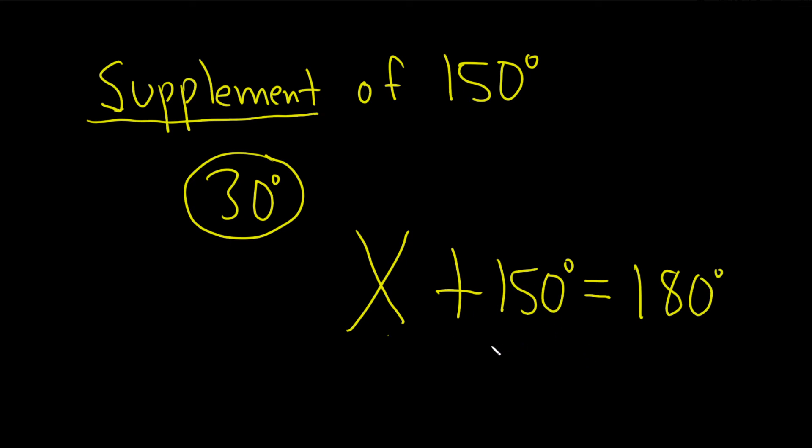Then you can solve this for x by subtracting 150 from both sides. So 180 minus 150 is 30 degrees.